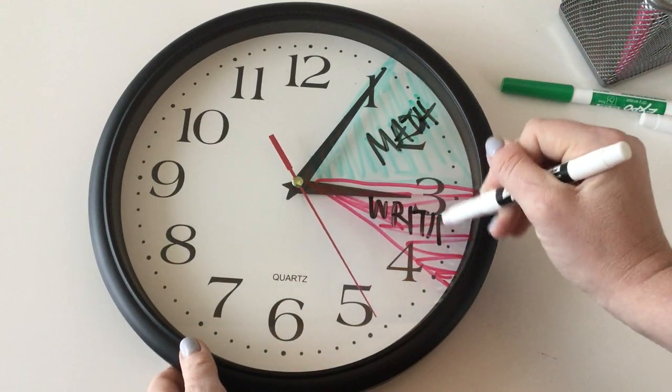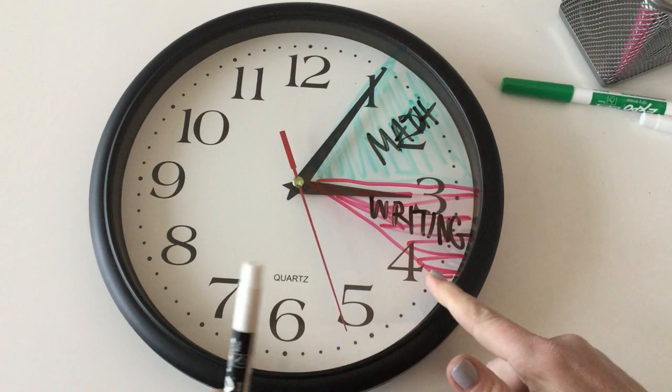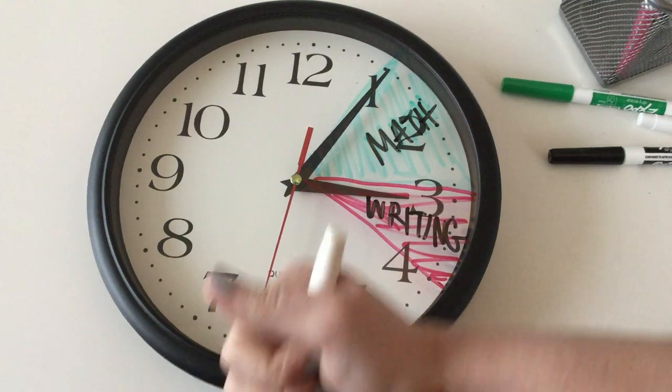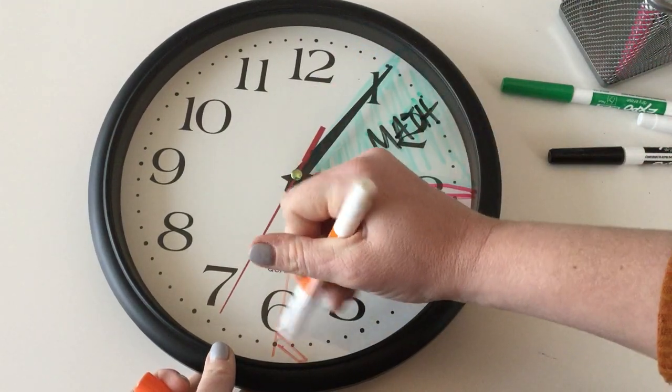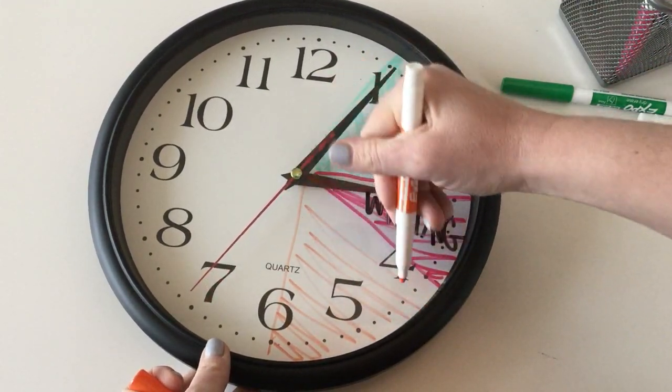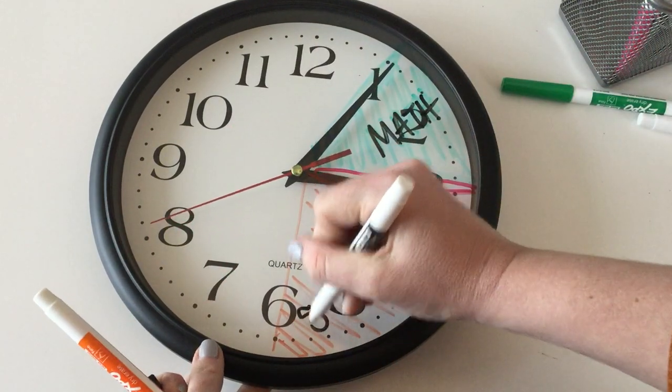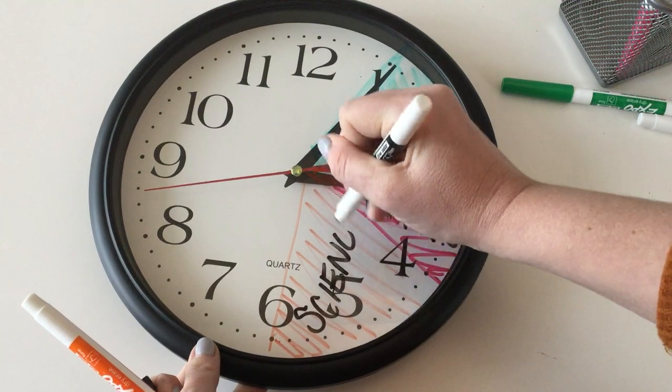We've got writing here in red. So when we get to the three we should be doing our writing. Then when we get to the four, we've got ten minutes left, which is perfect because that's the science assignment. We're going to take those last ten minutes, color that in, and that is science.